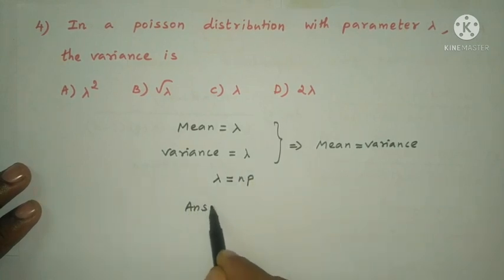Therefore the answer is option C. Variance is lambda.